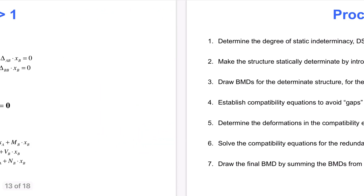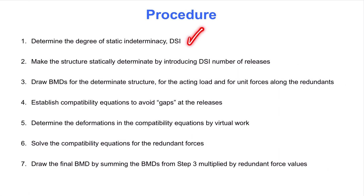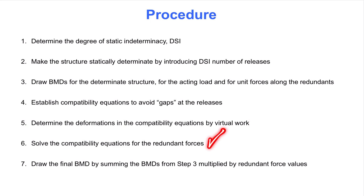The steps of the flexibility method are: first, determine the degree of static indeterminacy; next, make the structure statically determinate by introducing that number of releases; then draw bending moment diagrams for the determinate structure for the acting load and for unit forces along the redundants; establish compatibility equations to avoid gaps at the releases; determine deformations in the compatibility equations by virtual work; solve the compatibility equations for the redundant forces; and finally draw the final internal force diagrams by summing individual diagrams multiplied by redundant force values. This procedure mentions only bending moment diagrams, which is often sufficient for beams and frames where axial and shear deformations are usually negligible.